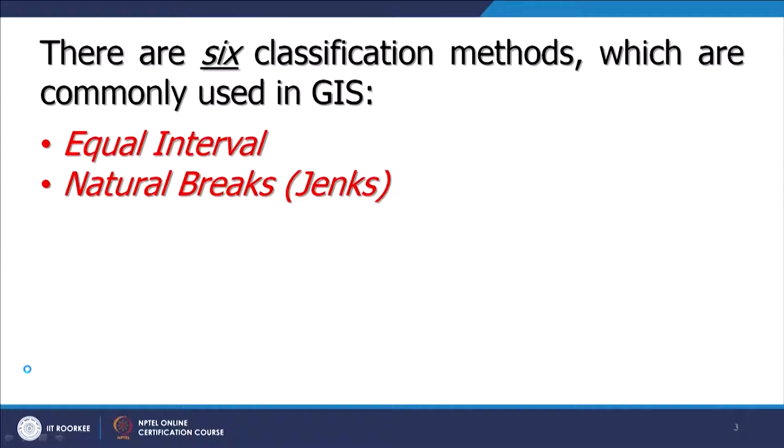The second method is called natural breaks, or Jenks, which is based on Jenks' algorithm. This is very common — we also use it when awarding grades to students, finding natural breaks where a large gap exists and a new class can be created. It is based on a statistical technique given by the Jenks formula.